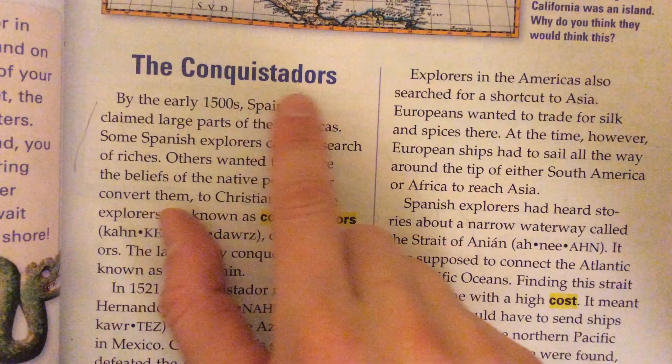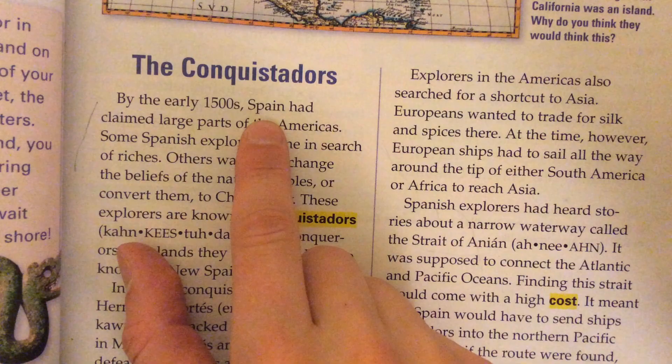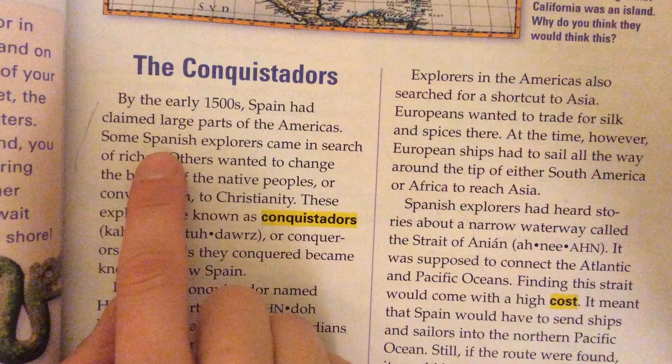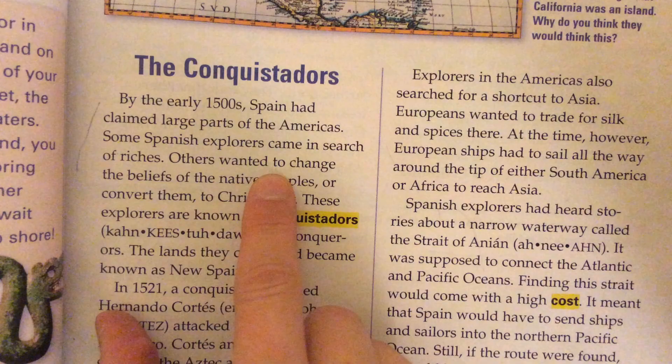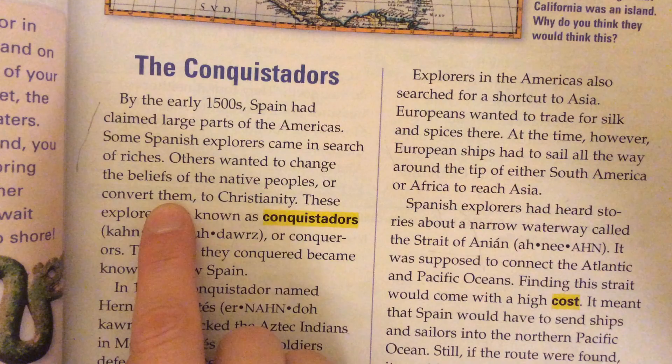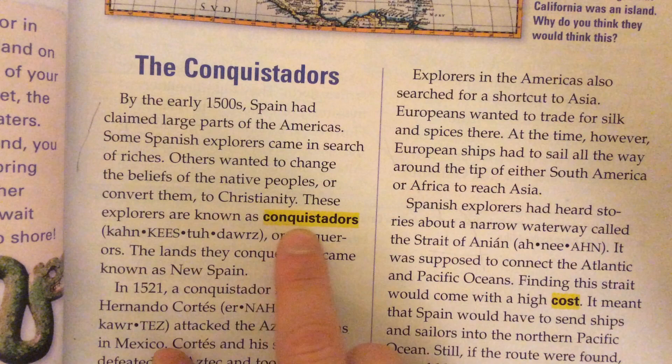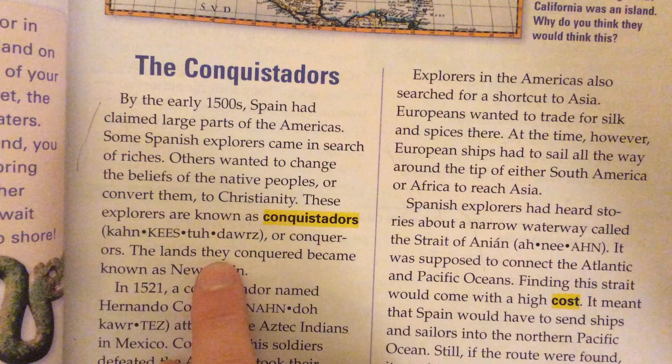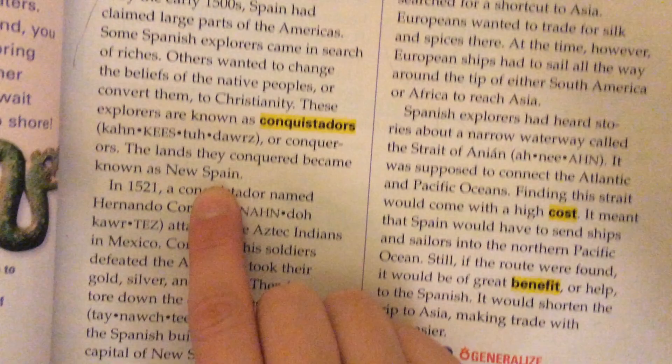The conquistadors. By the early 1500s, Spain had claimed large parts of the Americas. Some Spanish explorers came in search of riches. Others wanted to change the beliefs of the native peoples, or convert them to Christianity. These explorers are known as conquistadors, or conquerors. The lands they conquered became known as New Spain.